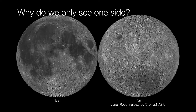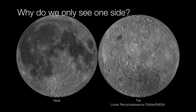So the question now is why do we only see one side? Well, we will eventually learn that this all has to do with something called tidal forces. But practically, what does it mean to only see just one side of the moon?